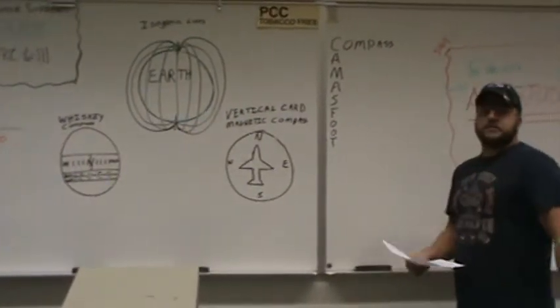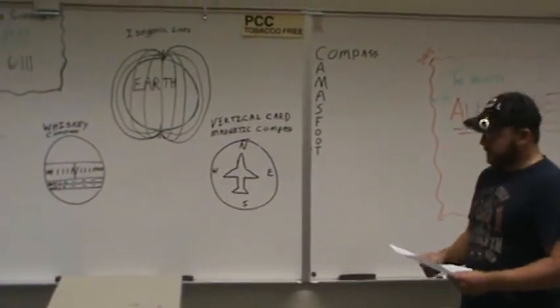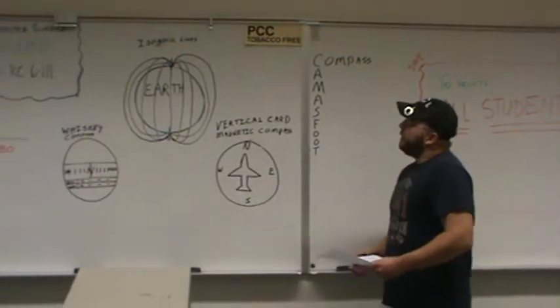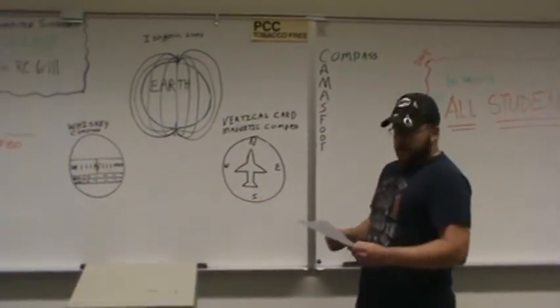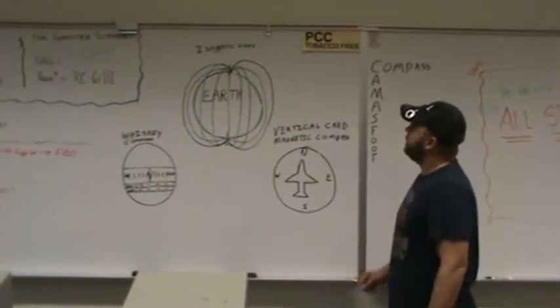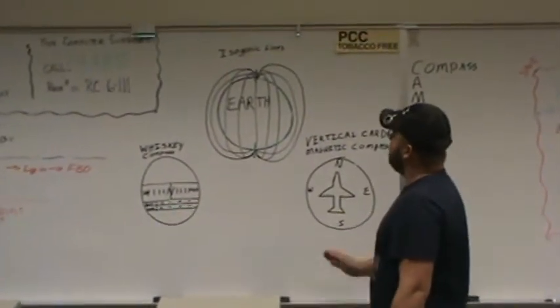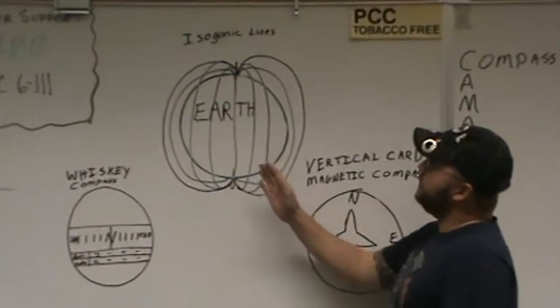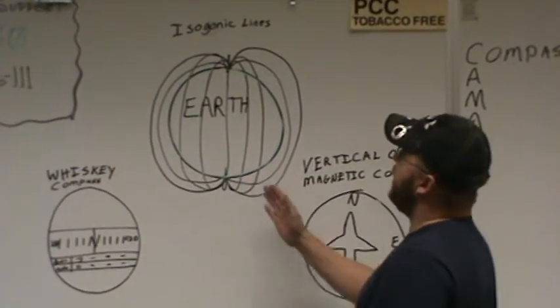There are a few errors that we get when we're using the compass. The first one is variation, and that is the difference between true north and magnetic north. True north points exactly from north to south as if you were looking at it on a map.